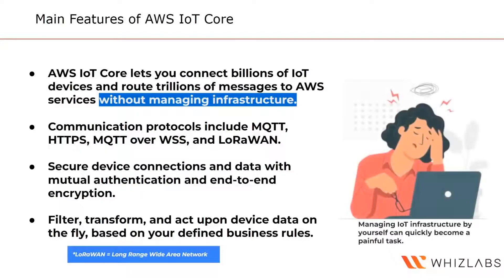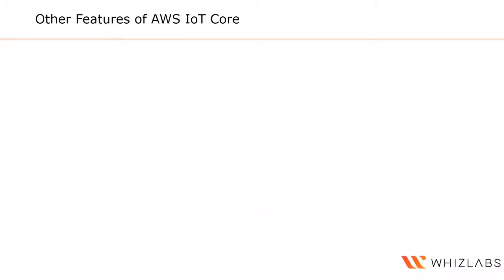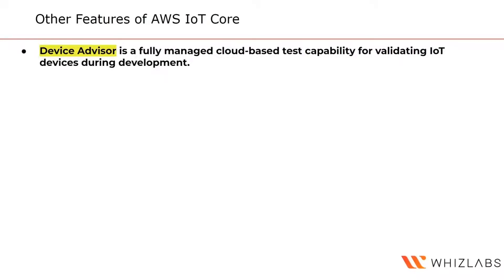Building your own IoT infrastructure can start easily with open-source technologies and your own servers, but as devices, connections, and messages scale up, it can become a painful task. AWS IoT Core also includes a Device Advisor, which allows you to test devices before putting them into production. While in the development stage, you can test and verify compatibility with AWS IoT Core, and once you have a completely tested and certified series of devices, you can deploy them in production.